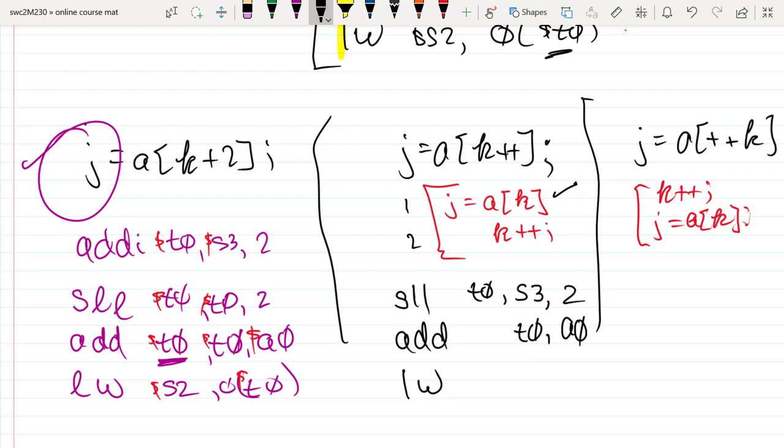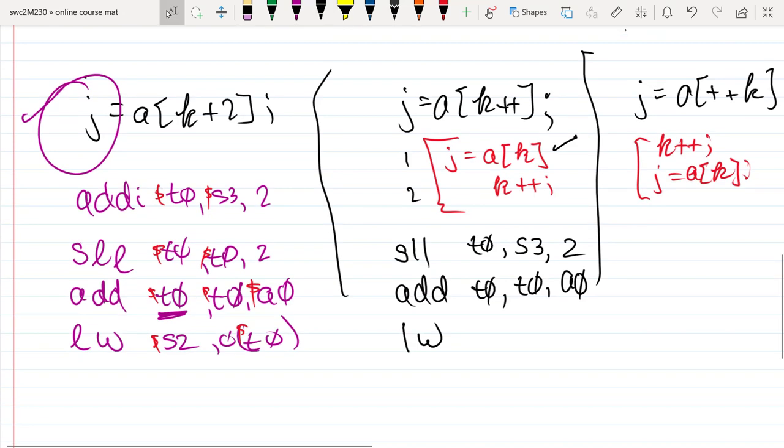And then I'll take that distance plus the address of the array so that I have the final, complete address of a sub k. I'll store that address here. And then go ahead and do a load word. Kind of dereference that. And store it into j, which we've been calling S2.